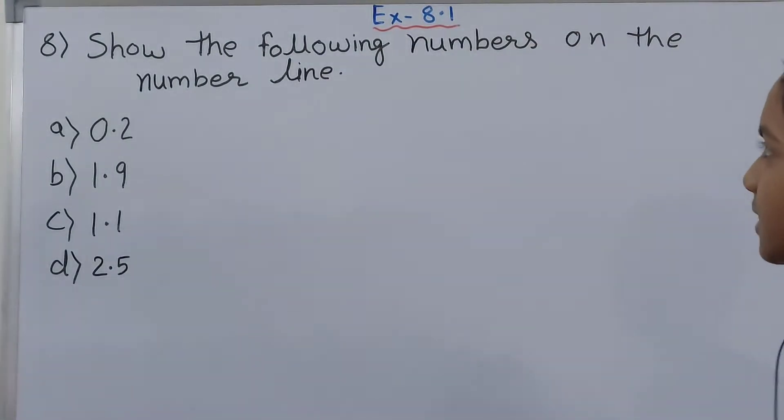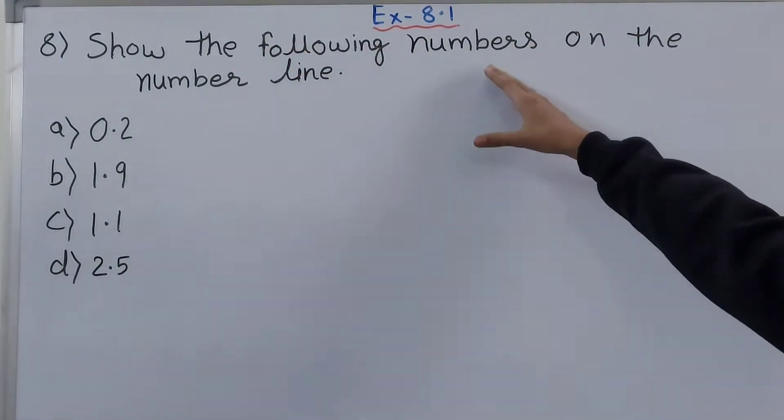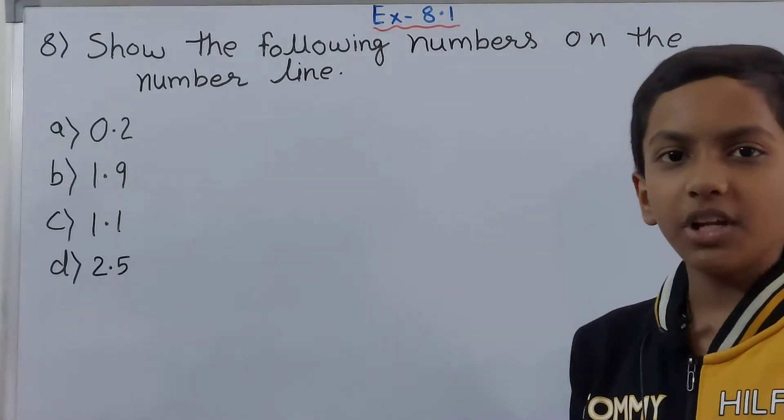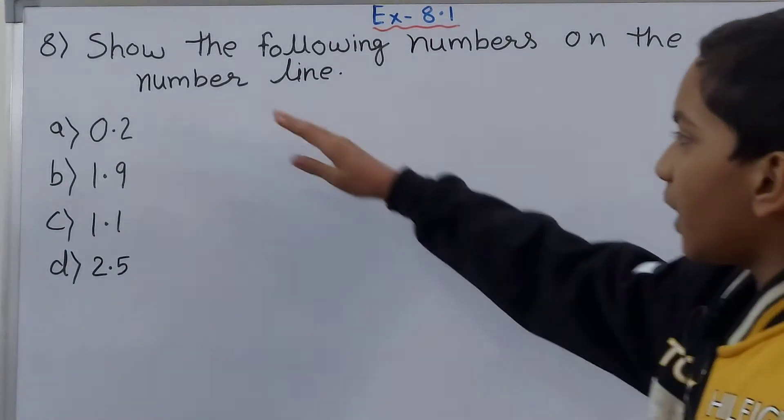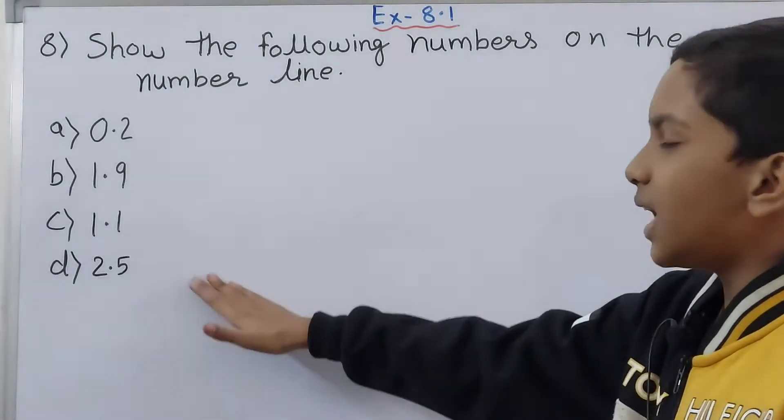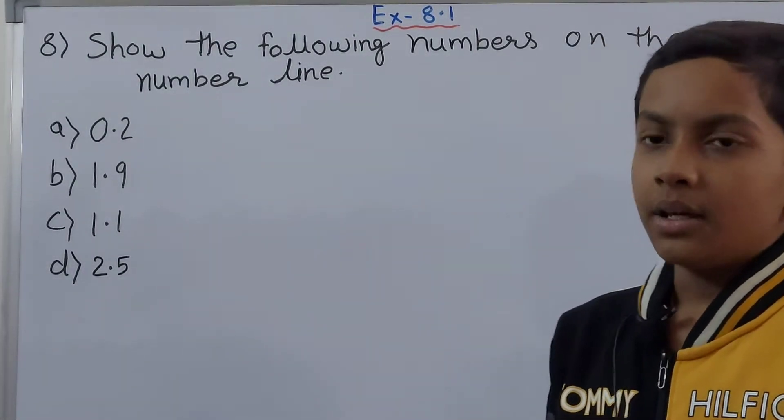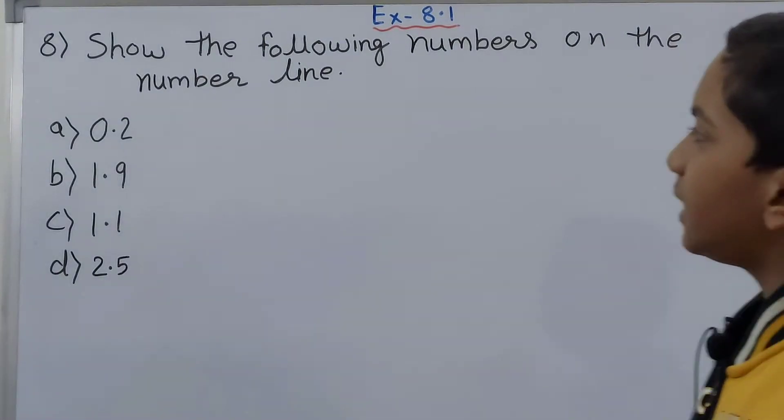This question says show the following numbers on the number line. So this question is related to number line. Over here, you can see we have some decimals and we have to show them on the number line. This is very simple. Let's see the A part.